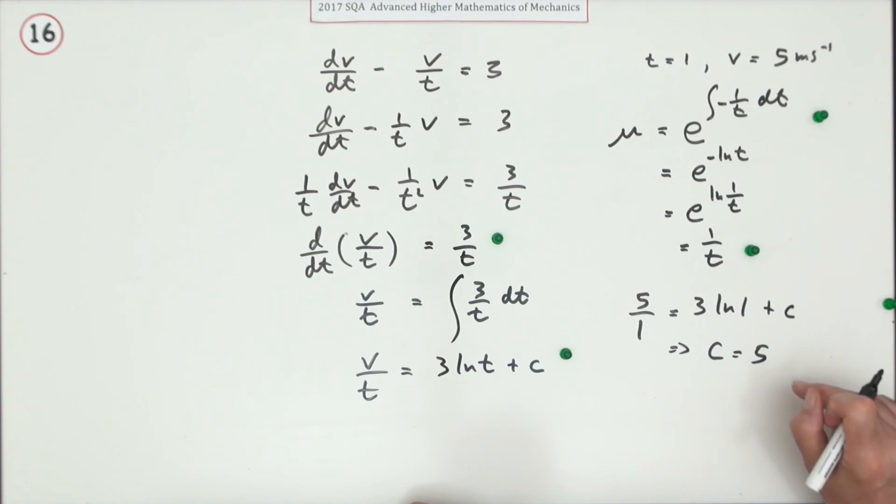Then there was a mark for getting the constant and popping it in together. So you've got v/t equals 3ln(t) + 5, so v equals—I'll put it down this way—5t + 3t ln(t) for the last mark.